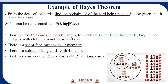From the 52 cards, 12 cards are face cards: king, queen, and jack across clubs, diamonds, hearts, and spades. As shown in the diagram, king has four cards, queen has four cards, and jack has four cards — making 12 face cards total. There is a set of face cards with 12 members and a subset of king cards with four members.